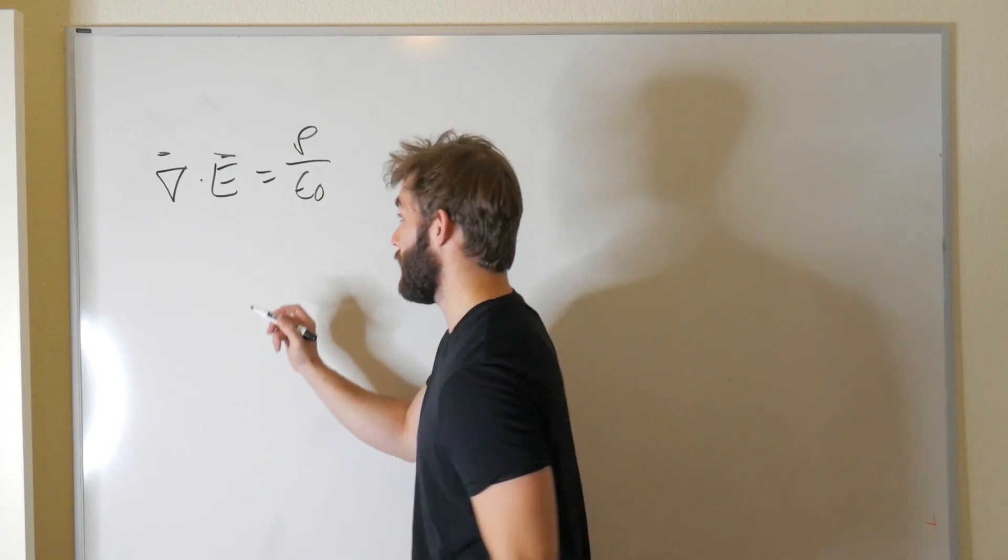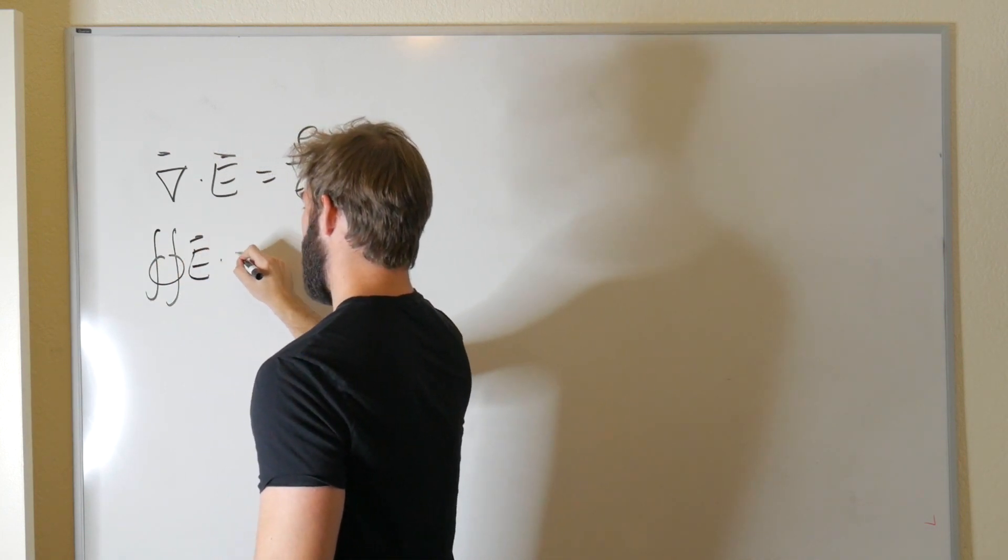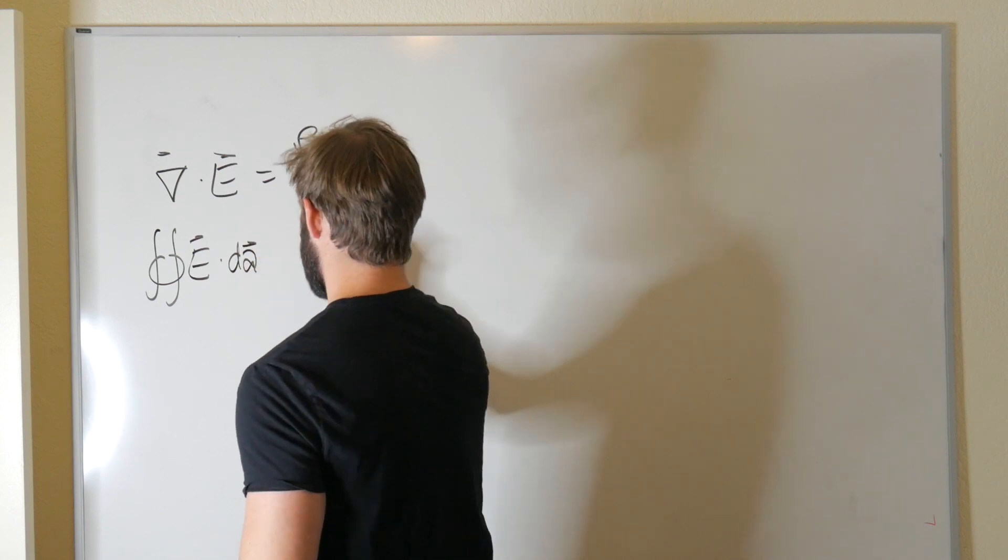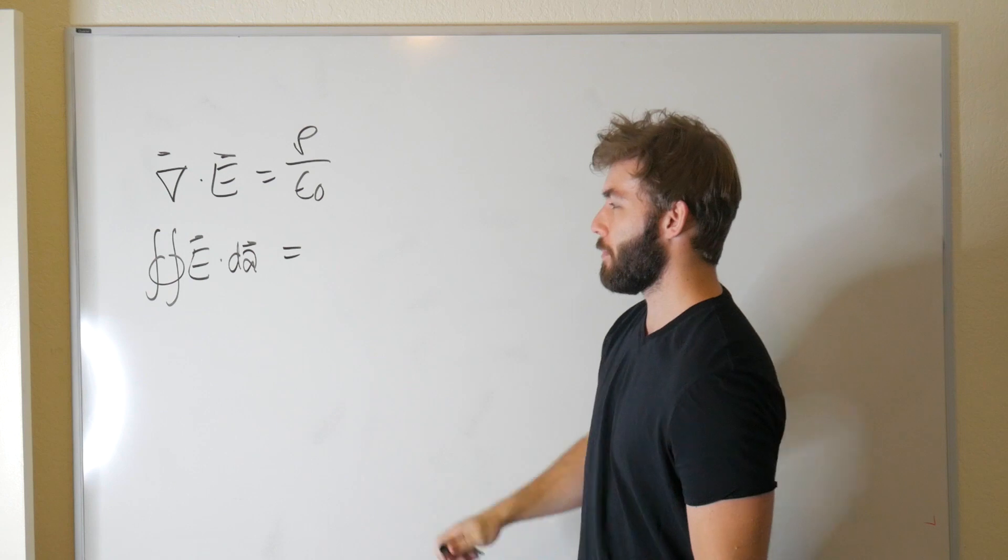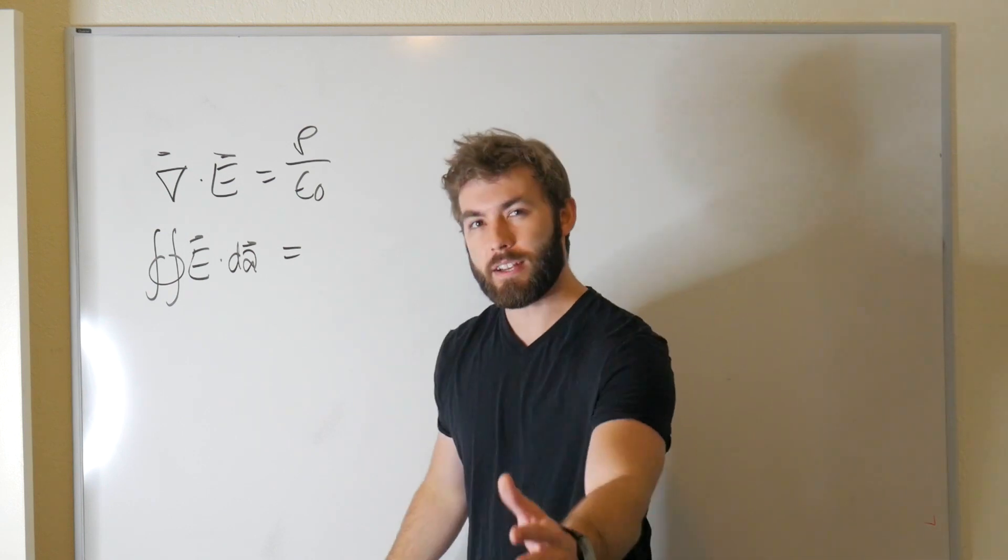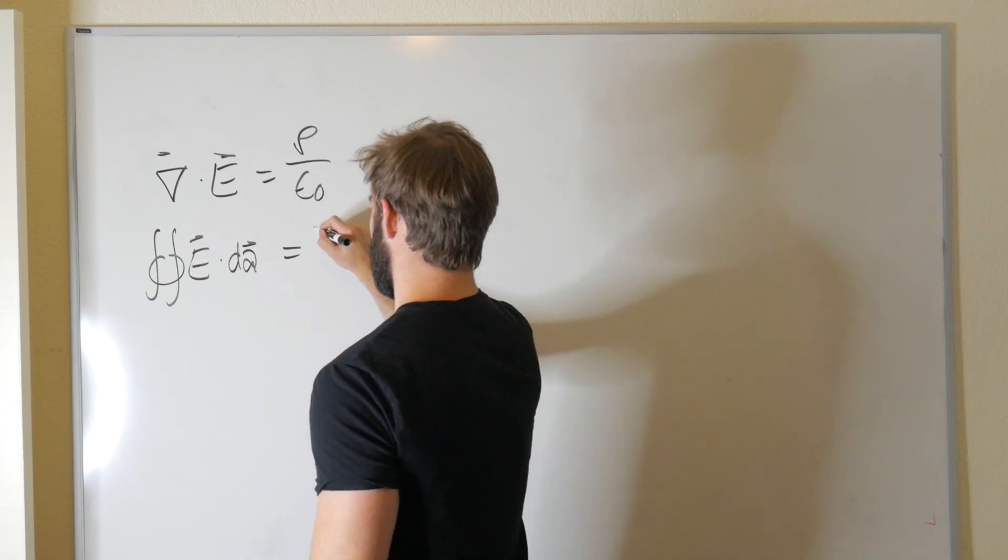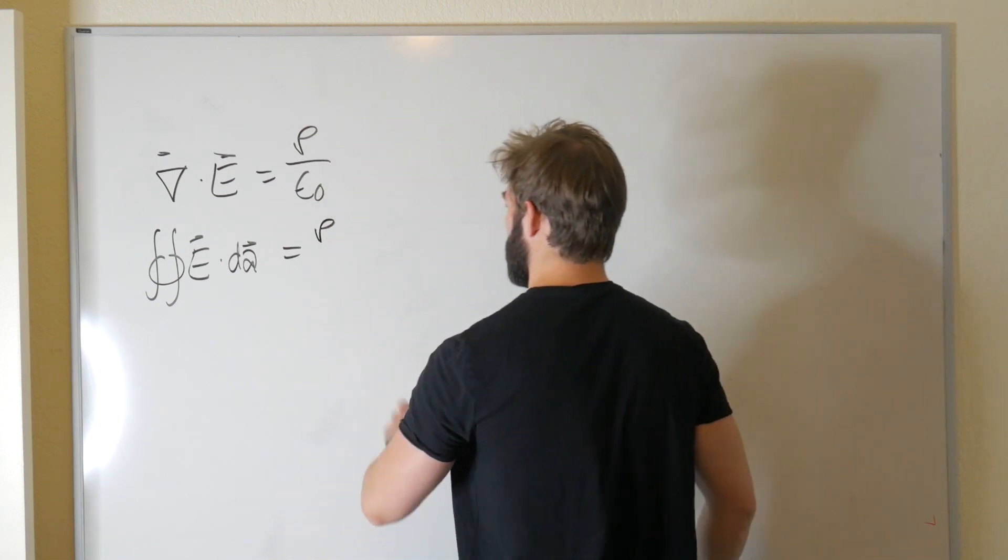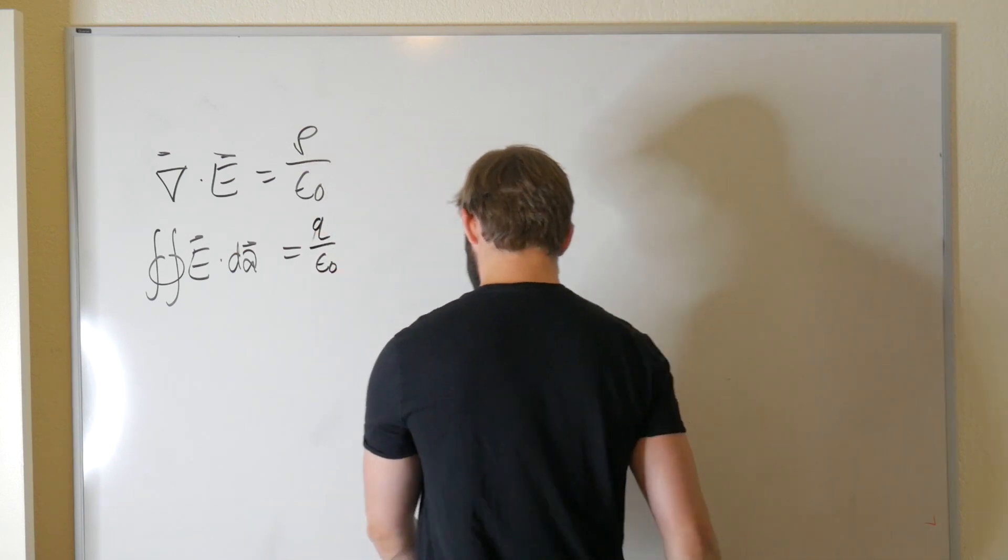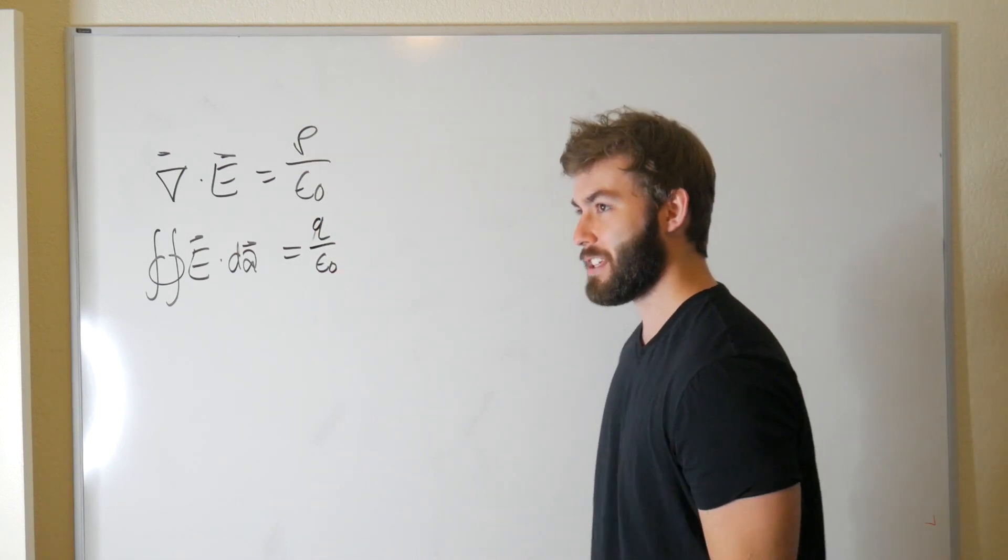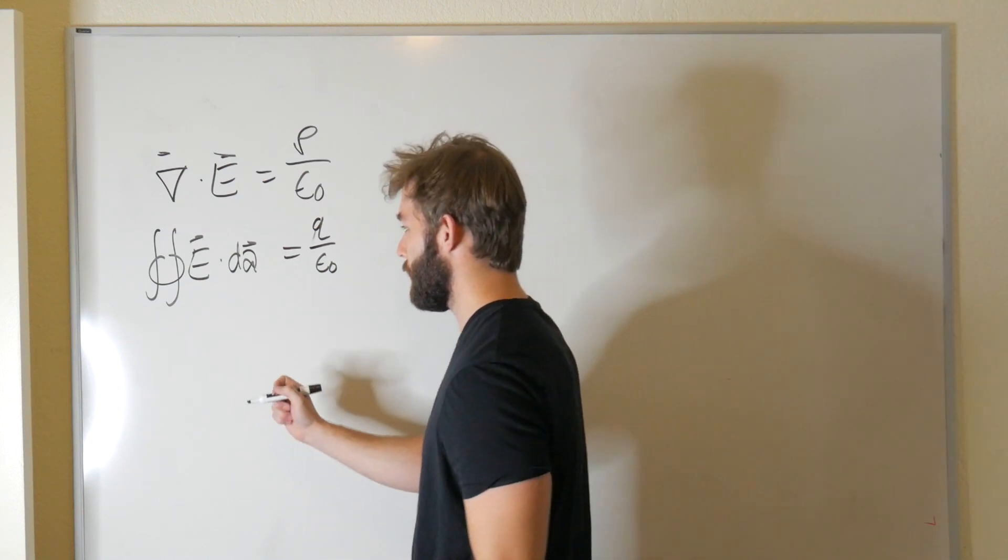Divergence theorem will tell us that we can write this as the closed surface integral of the electric field dotted into some infinitesimal area equal to the total charge divided by the permittivity of free space. But what is the total charge of just a point charge? It's just the point's charge, Q. That's not a Q. Q over epsilon zero. We might as well take it one step further and assume that the electric field is uniform, and pull it outside of the integral.